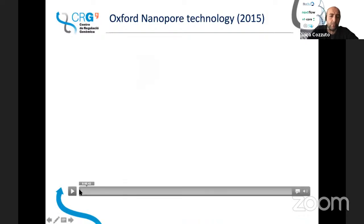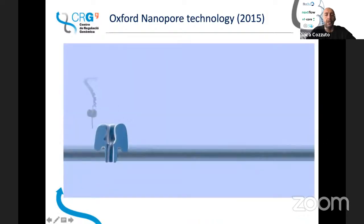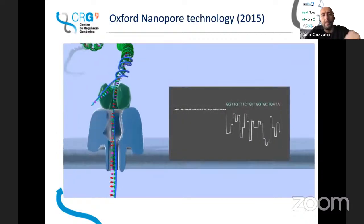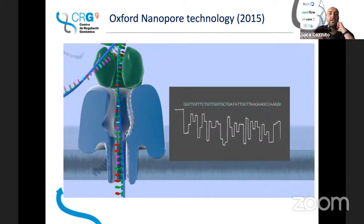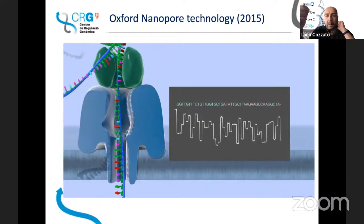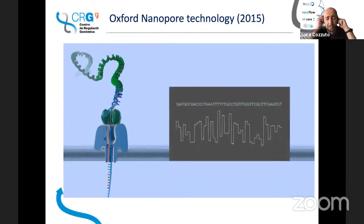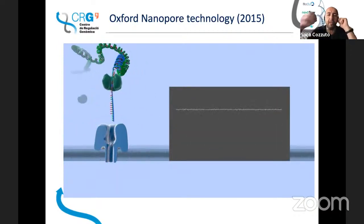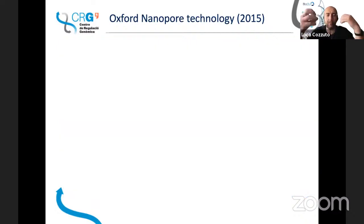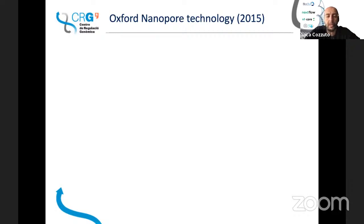Here there is a video showing how the technology works. Basically, the strand of transcript goes inside the pore, which gives you a signal — an electric signal that allows you to do the base calling, giving you information about each base. If you have a modification in that base, you have an alteration of the electric signal. This means that if you have a program that can detect this, you can get information about which base is modified and what kind of modification it is.